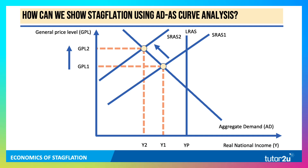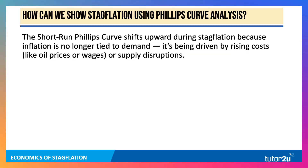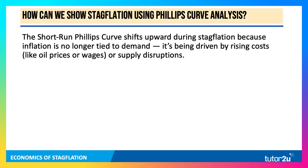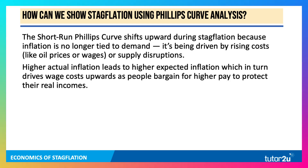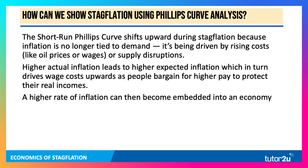We can also use Phillips curve analysis. The short-run Phillips curve is drawn as an inverse relationship between unemployment and inflation. It tends to shift upwards during stagflation because inflation is no longer tied purely to aggregate demand — it's rising costs and supply disruptions. Higher actual inflation leads to higher expected inflation, which in turn causes wages to rise as people, perhaps represented by unions, start bargaining collectively for higher pay to protect their real incomes. The danger is that a higher rate of inflation can become embedded into an economy — people see high inflation, come to expect high inflation, and often that leads to high inflation.